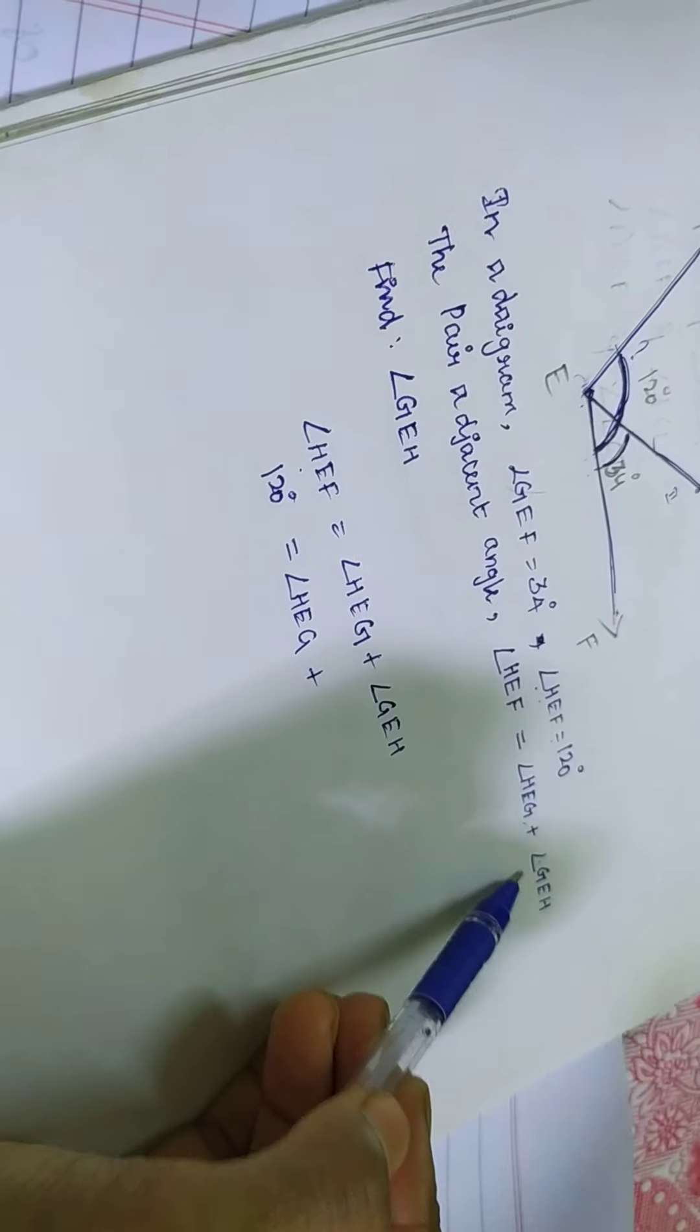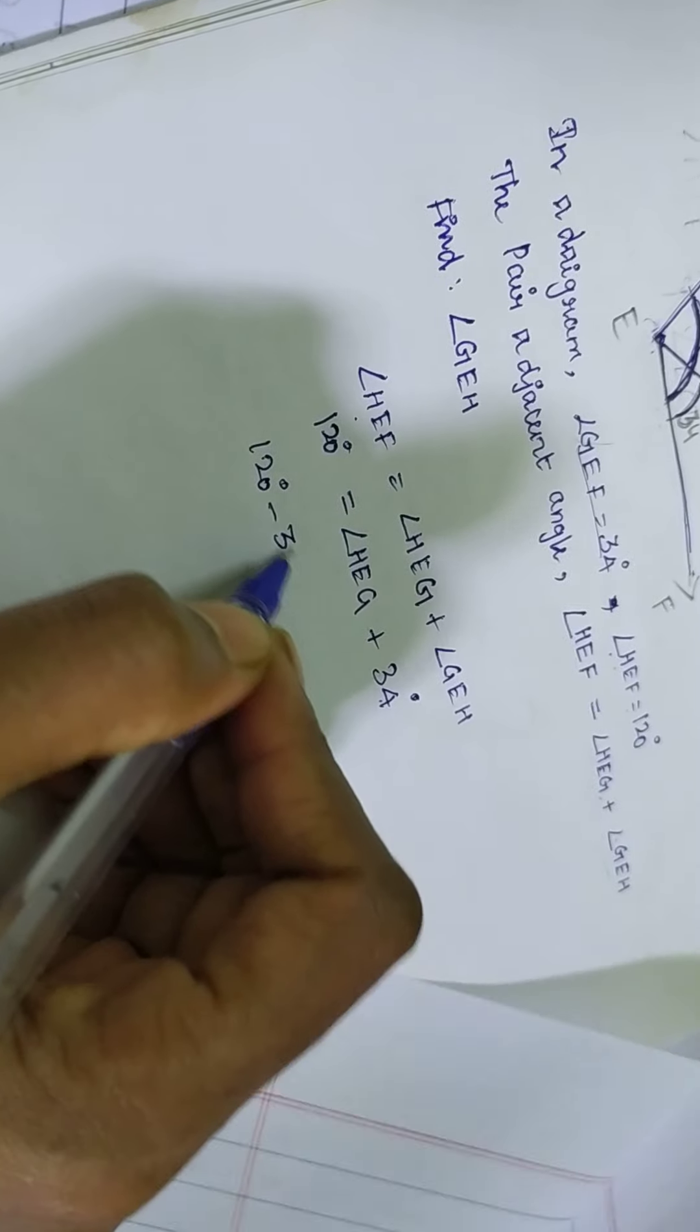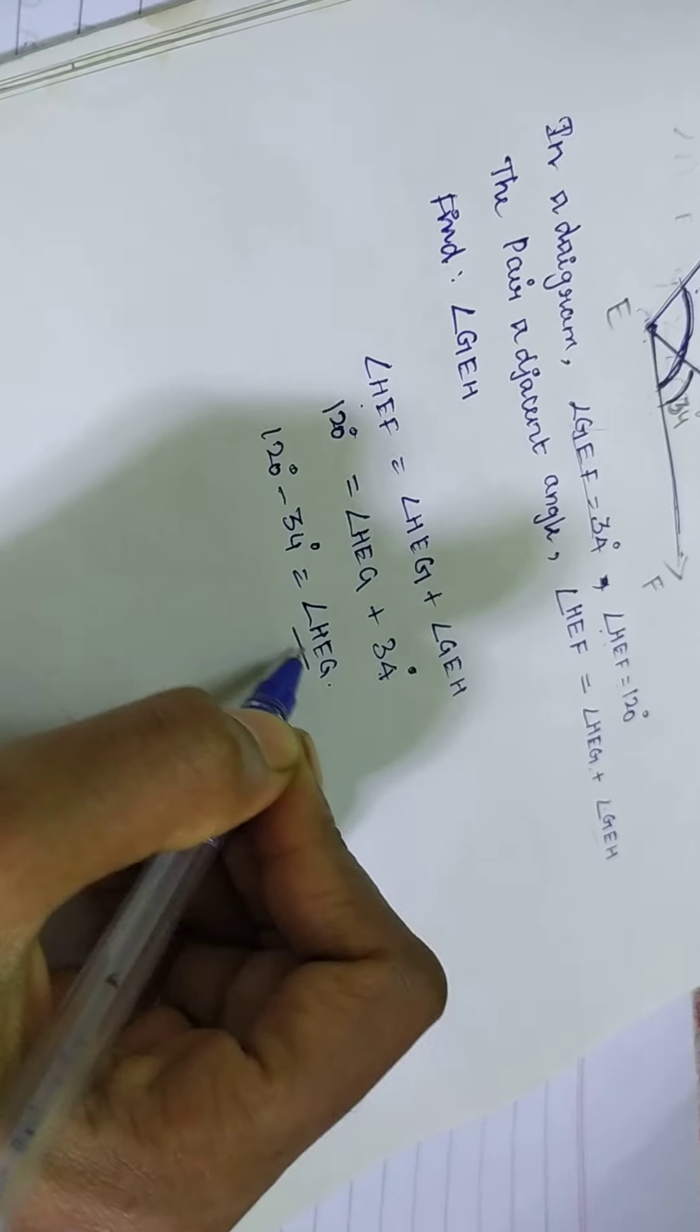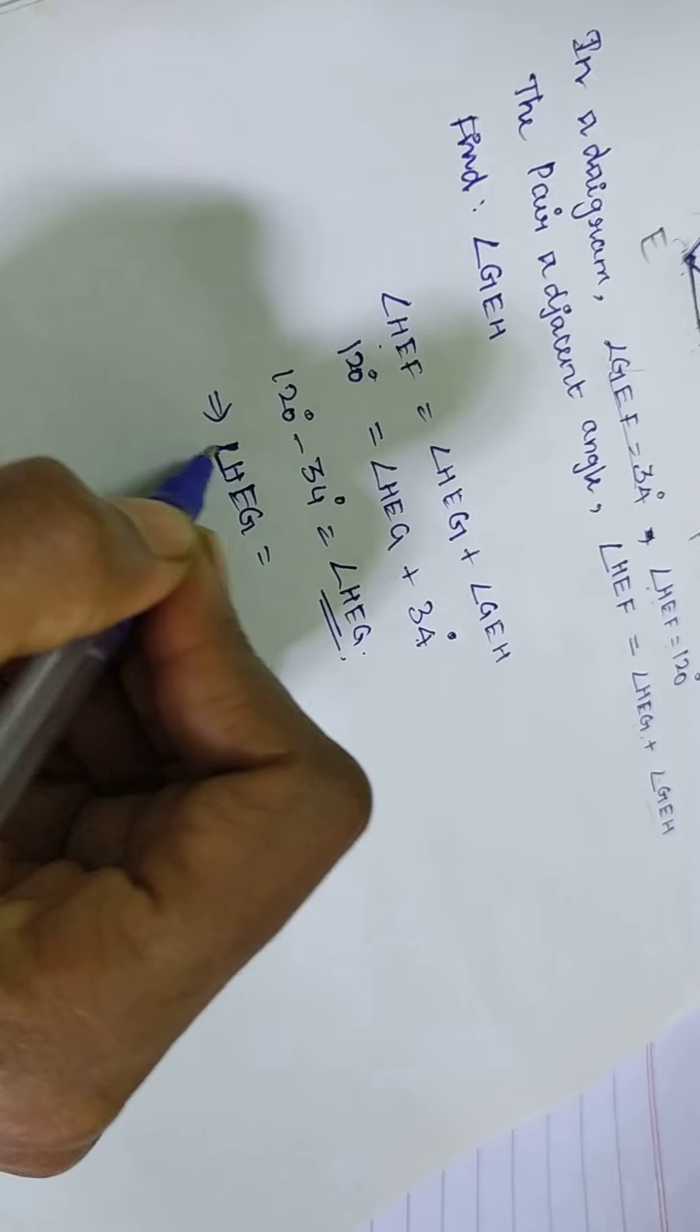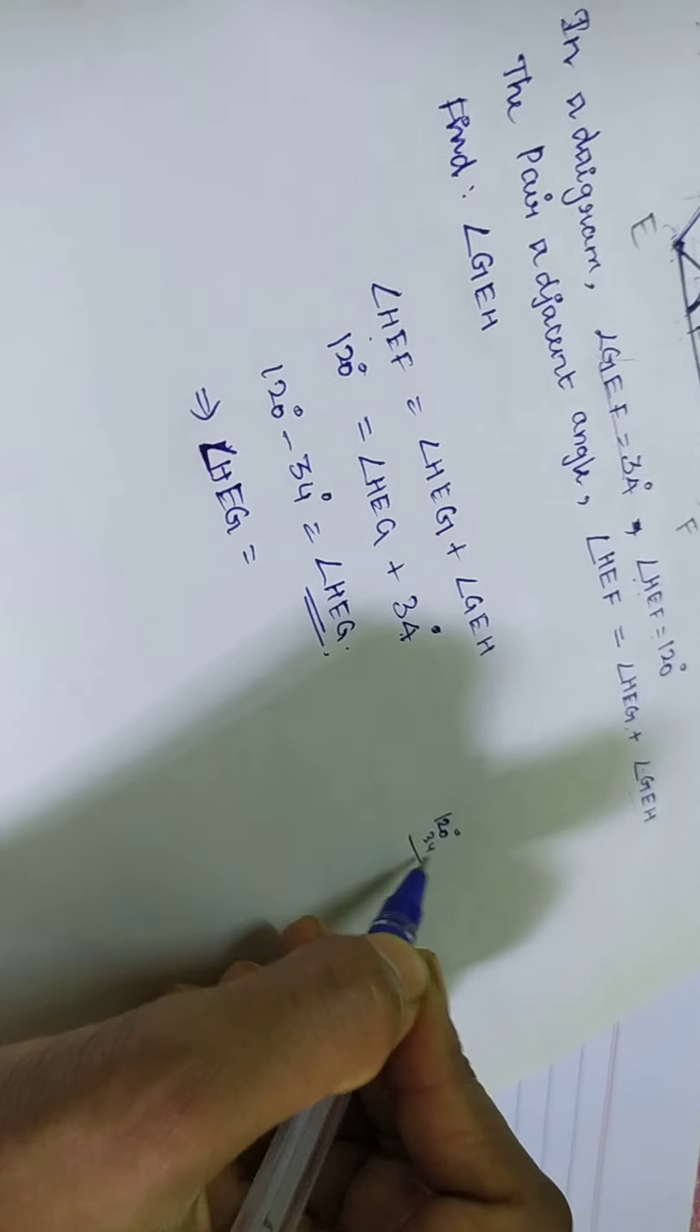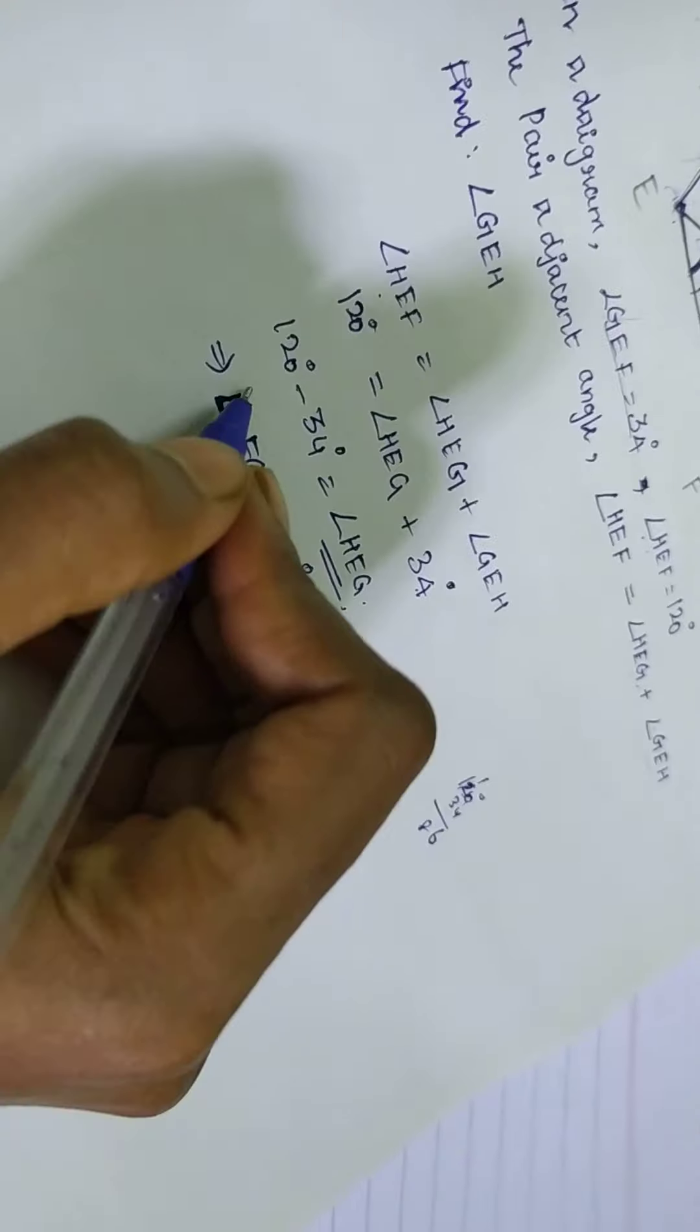Then G E F. What value am I having? 34 degrees. This is moving that place. 120 degrees minus 34 degrees is equal to angle H E G. That's only the asking. That implies angle H E G is equal to 120 minus 34. How much it will come? 6. 11 minus 3? 8.